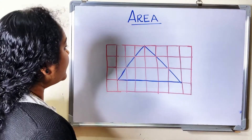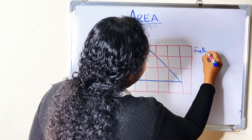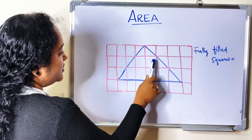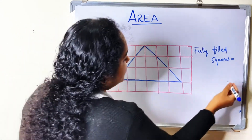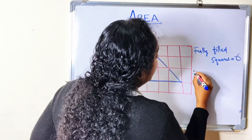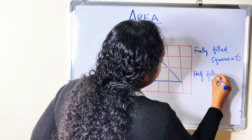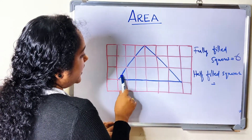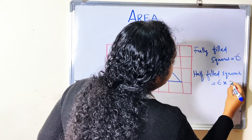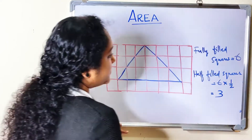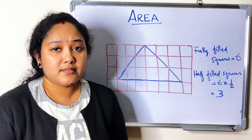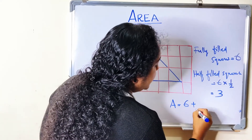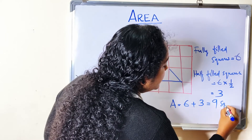Next example. In this figure, the fully filled squares are 1, 2, 3, 4, 5, and 6 — so 6 fully filled squares. The half filled squares are 1, 2, 3, 4, 5, and 6 — equaling 3 square units. So the area of this figure is equal to 6 plus 3, which equals 9 square units.